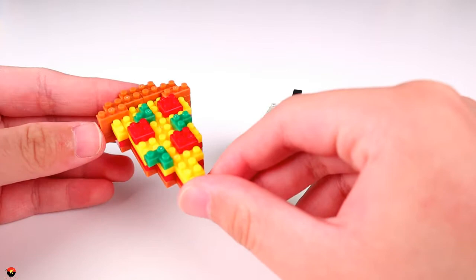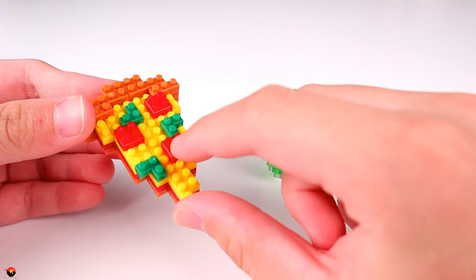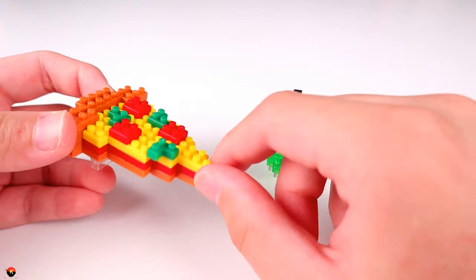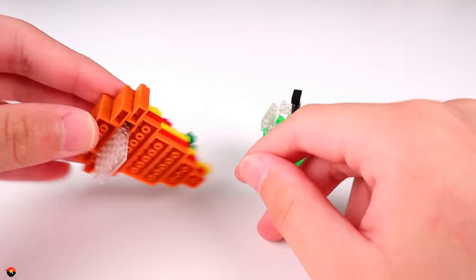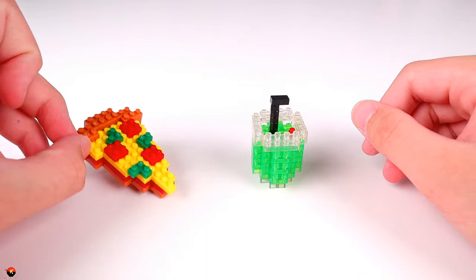To me, these look like pepperonis and peppers. I could be wrong—it could be like a margarita pizza with tomato and basil, but based on the cheese design and the recognizable pepperonis, I'm going to say this is a pepperoni and pepper pizza. It also comes with these transparent bricks that allow you to stand it up so it almost looks like it's floating.